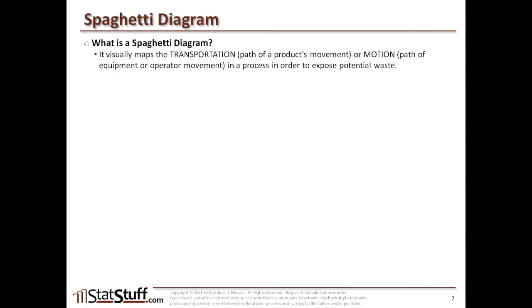It's tracking the transportation or the motion within the process in order to expose any potential waste that might occur there. And it's usually used for mapping the paths of movement within a fixed environment, for example within one office floor, a warehouse, or between multiple buildings that are on a campus.